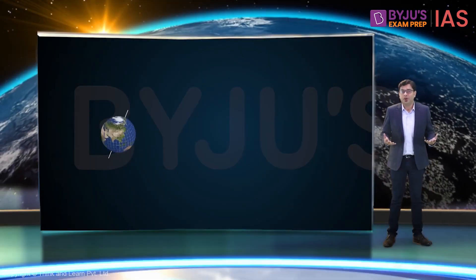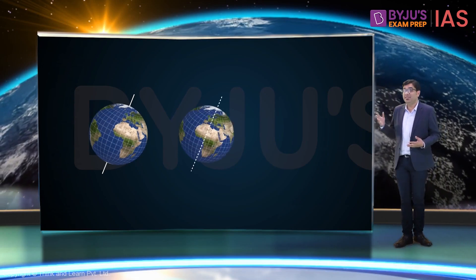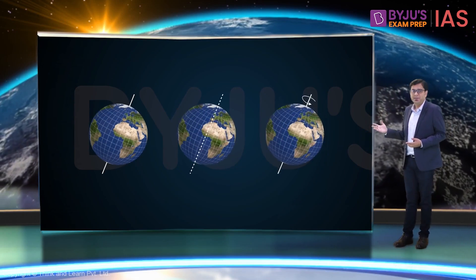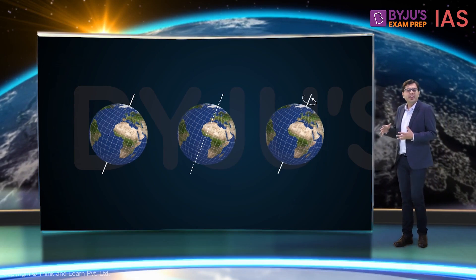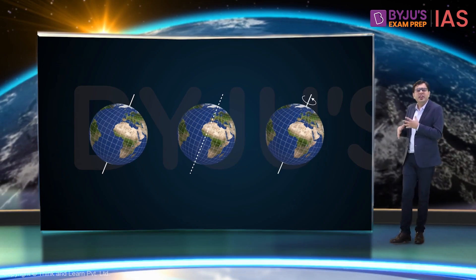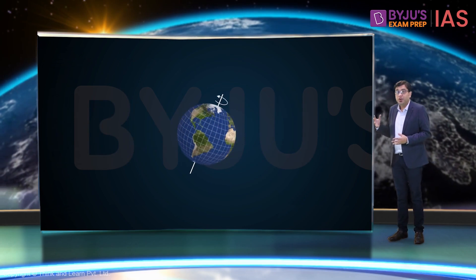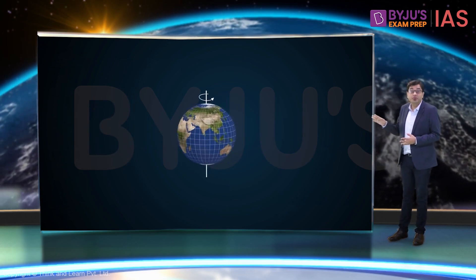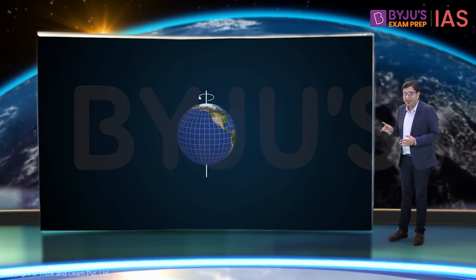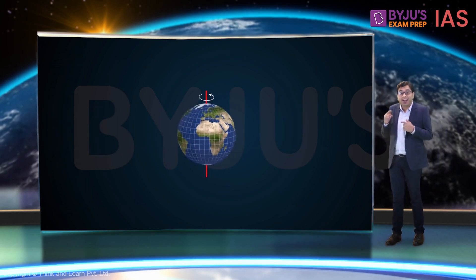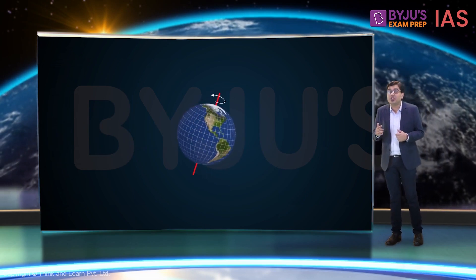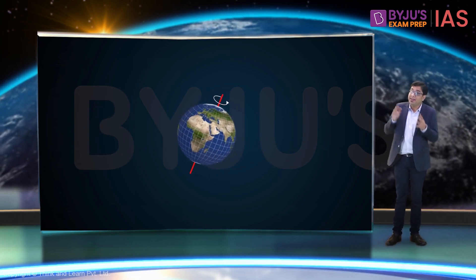I'm sure you must have seen images of Earth like these. Don't you think there is something odd about them? Earth is shown a bit tilted and not straight. This is because the axis around which the Earth rotates is itself tilted. Why is that? How is Earth's axis tilted?